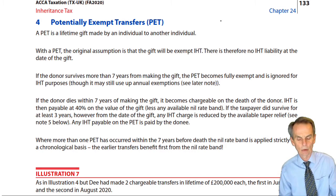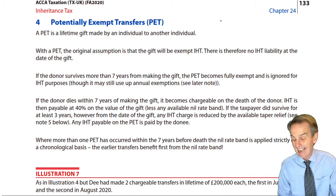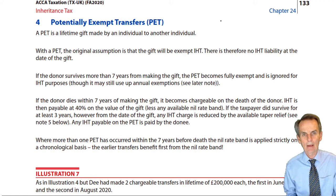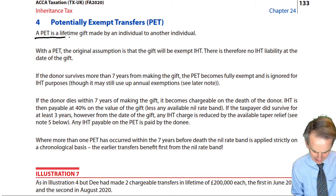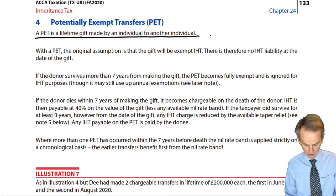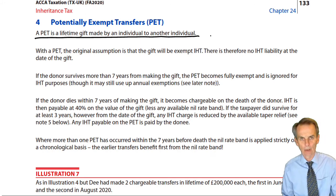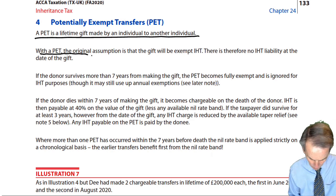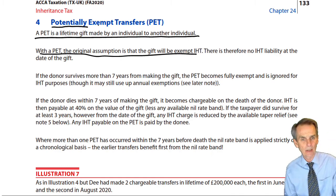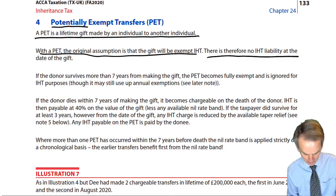We work on a seven-year cycle for computing IHT arising on death. A PET is a lifetime gift made by an individual to another individual. Transfers into trusts are CLTs. Transfers to your spouse or civil partner are exempt. For any other individual, these are PETs. With a PET, the original assumption is that the gift will be exempt — there is no IHT liability at the date of the gift.